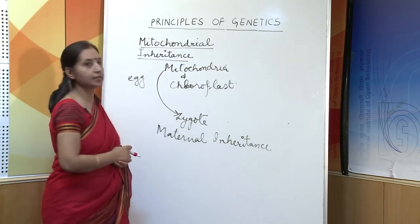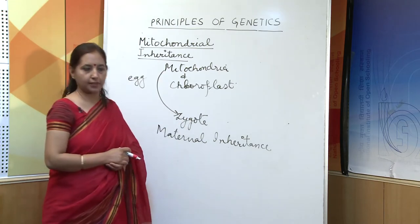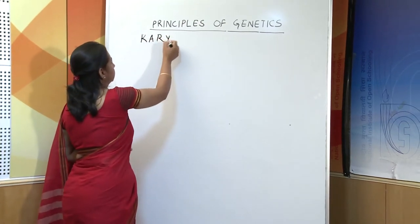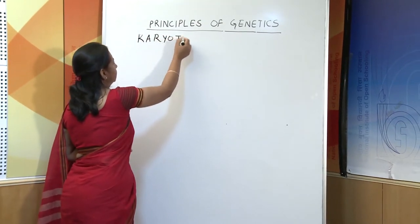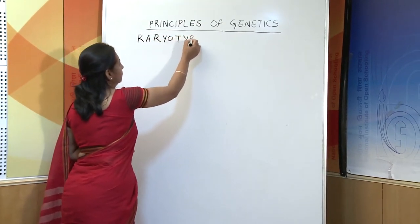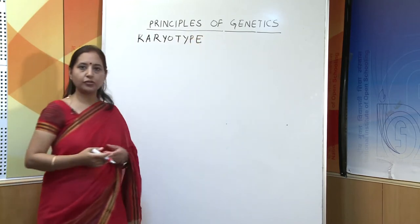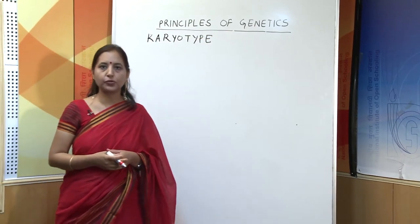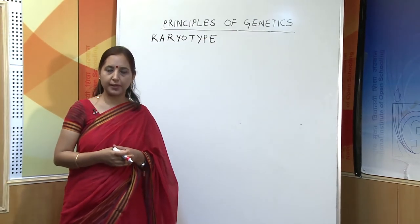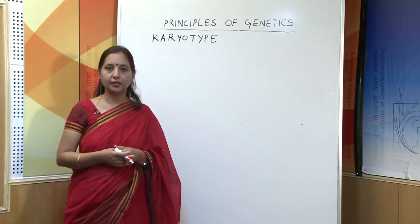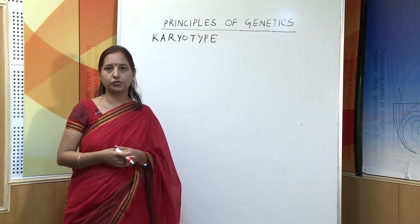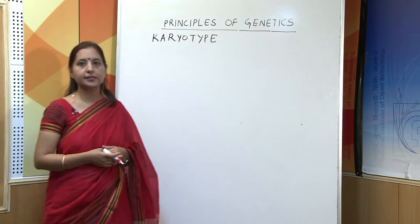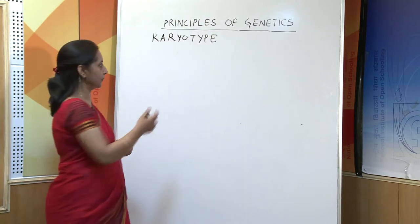The next topic is karyotype. Karyotype is the arrangement of chromosomes on the basis of their size and the location of the centromere, and this complete arrangement is called karyotype.